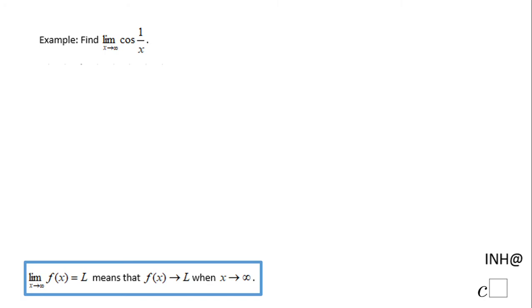Welcome or welcome back to I Need Help at C Square. In this example, we need to find the limit as x approaches infinity of cosine of 1 over x. So let's take a look and think about what happens with cosine of 1 over x.